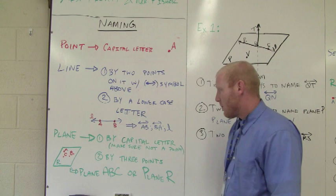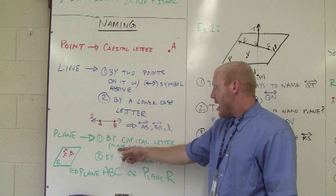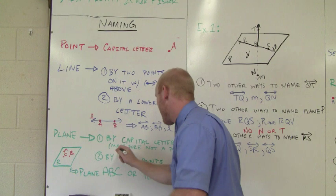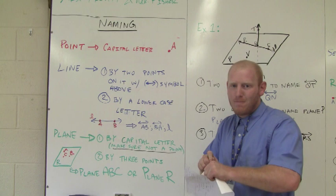Finally, we have a plane. We can name it by a capital letter. It's important that we make sure that it's not a point. So if we just name it by one thing, we can't just have it be a point.